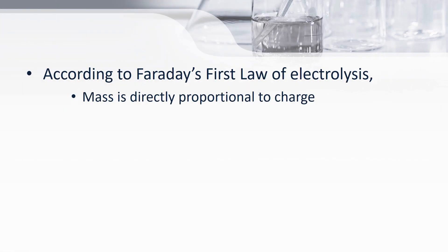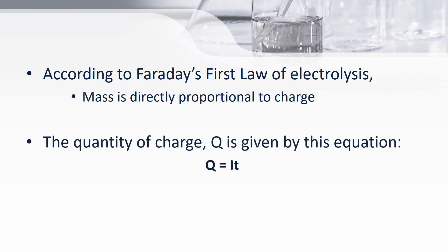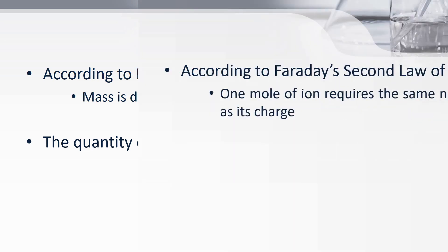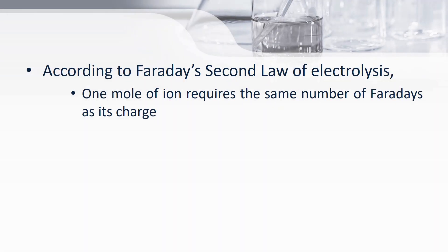From Faraday's first law, we can deduce that mass is directly proportional to charge. We already know that the quantity of charge Q is derived from the expression Q = It, where I is the current and t is the time taken for the charge to be passed. Therefore, we can deduce that the mass m is directly proportional to the product of current times time. From Faraday's second law, we can deduce that one mole of an ion requires the same number of Faradays as its charge.